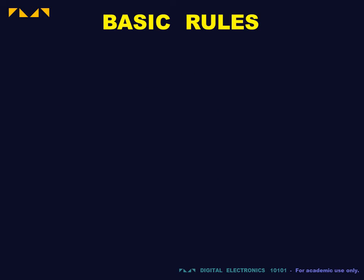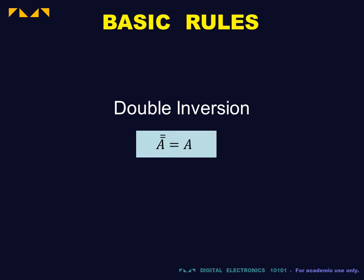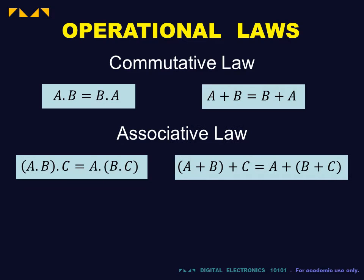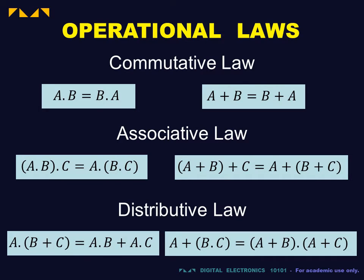For the most part, the identities of Boolean algebra resemble those of regular algebra. For instance, the inverse of an inverse returns the operand. The commutative, associative, and distributive laws of Boolean algebra are like those of regular algebra.